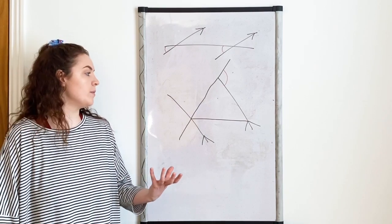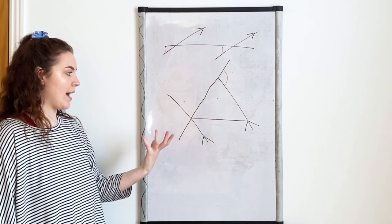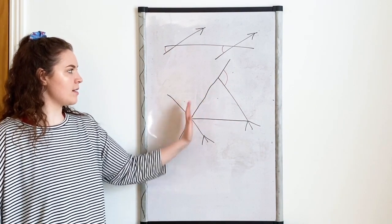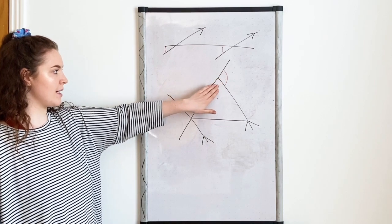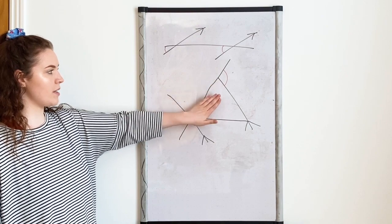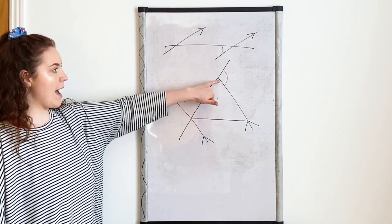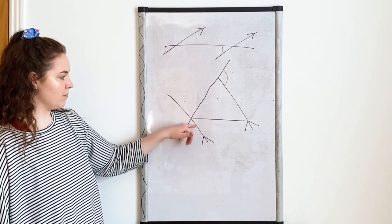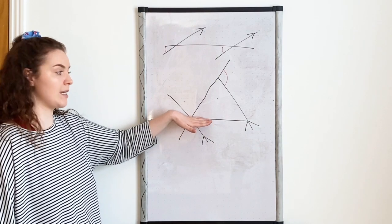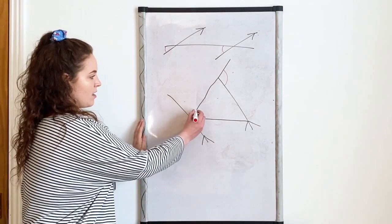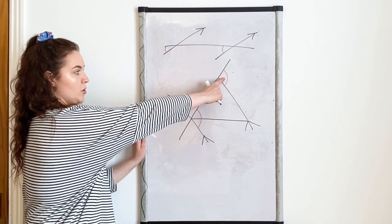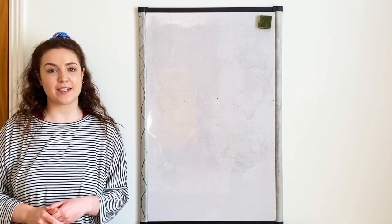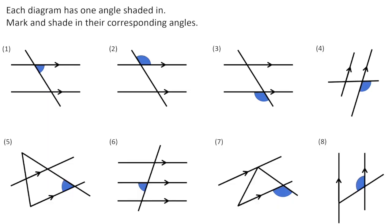Now looking at a slightly harder example: if I've got this angle here and I want to find its corresponding angle on the diagram. I've got my parallel lines, and this is the transversal cutting across both of them. I'm going to picture this sliding down to the other parallel line — I want it on the same side of the transversal and to the right-hand side of the other parallel line. I can see that this angle has actually been split in two by this line. That doesn't matter — this whole angle here, this angle plus this angle, is corresponding to this angle up here. Okay, you're now ready for question two — mark in all of the corresponding angles to the angle you are given. Pause the video and have a go.